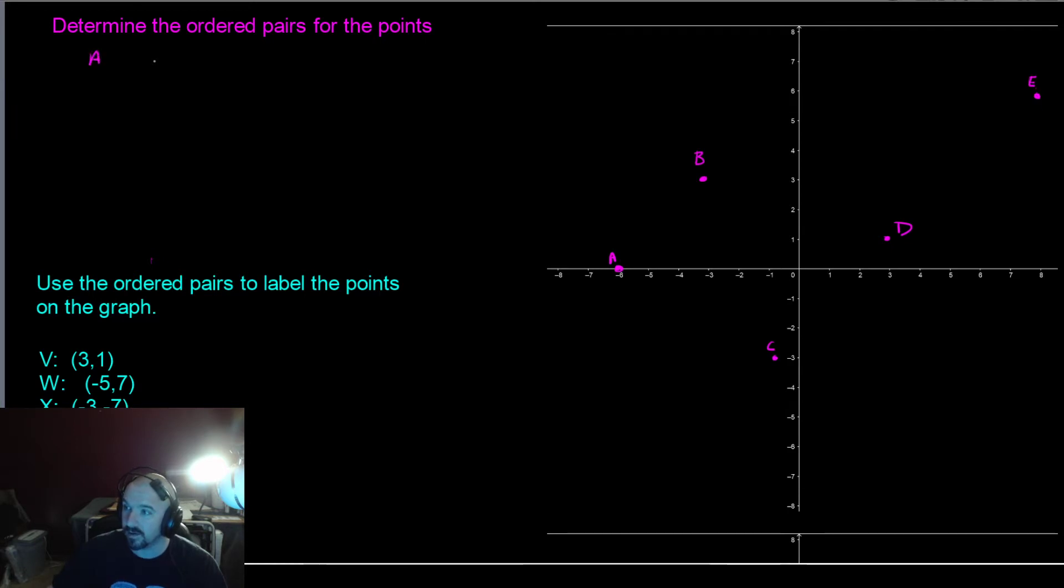So we'll start with A. We notice that it goes over to negative 6 on the X, but it does not go up and down. So it doesn't move on the Y axis, that makes it 0 for the Y. So we have negative 6 for the X, 0 for the Y.